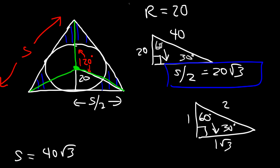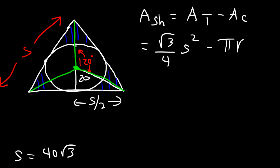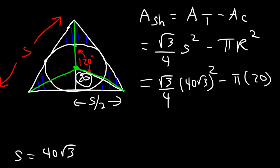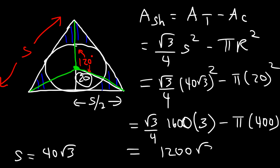Now we have enough to calculate the area of the shaded region: the area of the equilateral triangle minus the area of the circle. The area of an equilateral triangle is (square root of 3 divided by 4) times s squared, and the circle's area is pi r squared. With s equal to 40 square root of 3 and r equal to 20: 40 squared is 1600, square root of 3 squared is 3, giving 1600 times 3 divided by 4 equals 1200 square root of 3. So the exact answer is 1200 square root of 3 minus 400 pi.